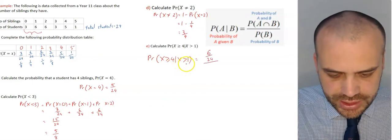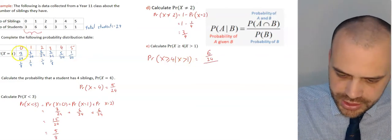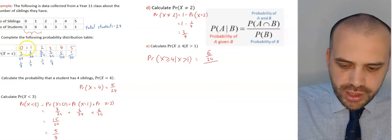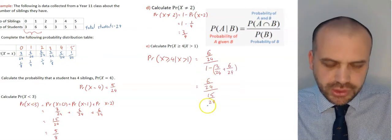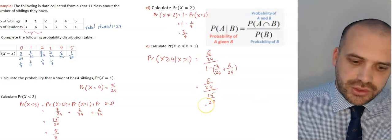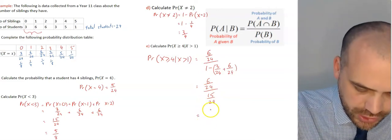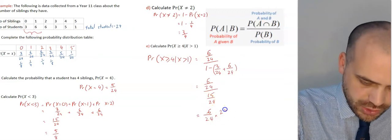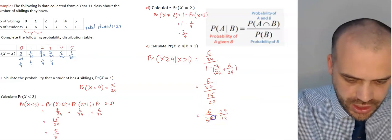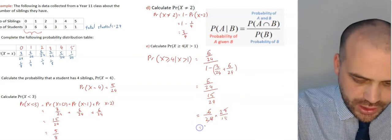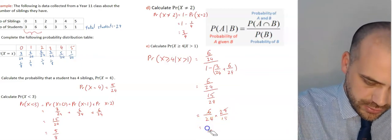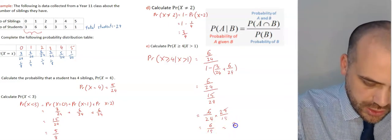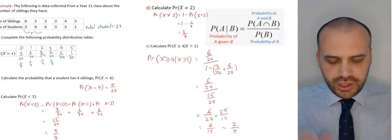Then we need P(X > 1). The easy way is 1 minus P(X = 0) minus P(X = 1), which gives 1 minus 3/24 minus 6/24 = 15/24. So we have 6/24 divided by 15/24. Multiplying by the reciprocal, the 24s cancel, leaving 6/15, which simplifies to 2/5. That's our final answer.